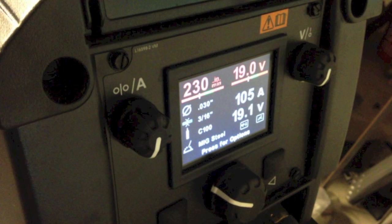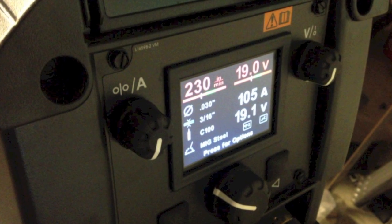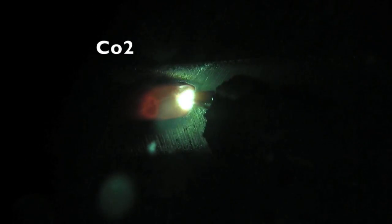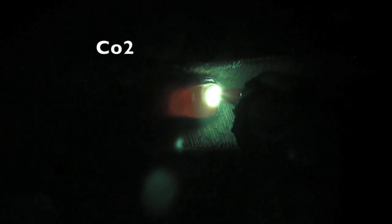The only change I'm going to make is I'm going to bump voltage up to 19 volts instead of 18 volts, keeping the wire feed speed exactly the same. It doesn't look a whole lot different. It certainly has a very smooth arc. You don't see a lot of spatter.